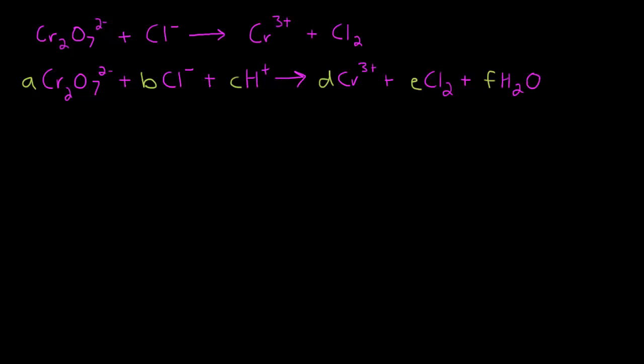And just like the basic equation, we don't have enough information yet to balance this. We've only got four unique elements, but we have six unknown variables. So we're going to have to add the oxidation states for each of our atoms.